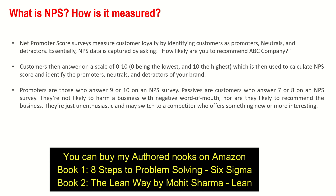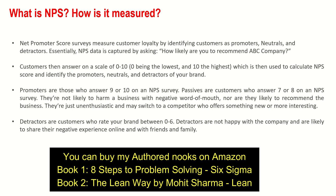Promoters are those who answer 9 or 10 on an NPS survey. Passives or neutrals are customers who answer 7 or 8. They are not likely to harm a business with negative word of mouth, nor are they likely to recommend the business — they are just unenthusiastic and may switch to a competitor who offers something new. Detractors are customers who rate your brand between 0 and 6, and are likely to share their negative experience online and with friends and family.